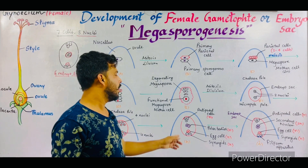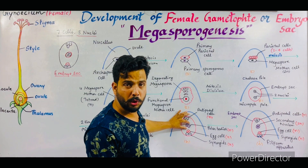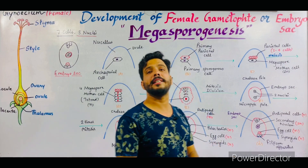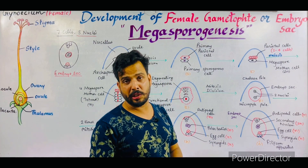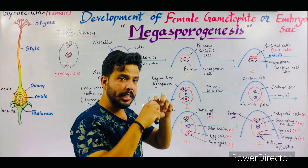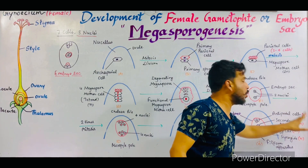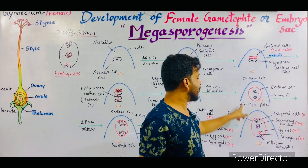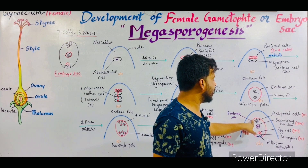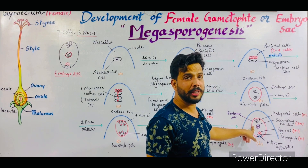All these cells and nuclei are haploid in nature. But after some time, these two haploid polar bodies fuse together and convert into the secondary nucleus, also called the central cell, which is diploid in nature — because two haploid cells fuse with each other to form a diploid cell. So thus you can see there are total seven cells and eight nuclei. Three plus three plus one equals seven cells, but eight nuclei are there because there are two polar bodies in the central cell.